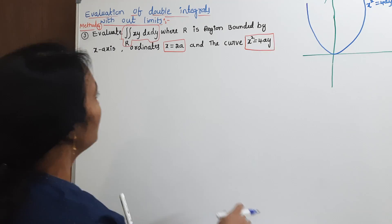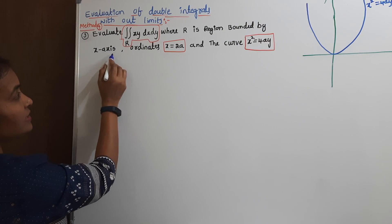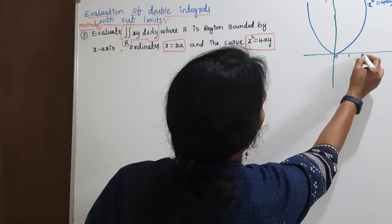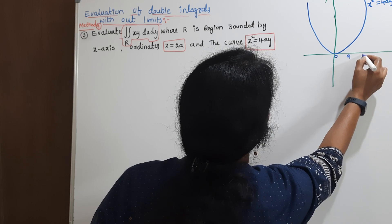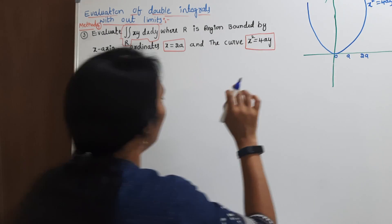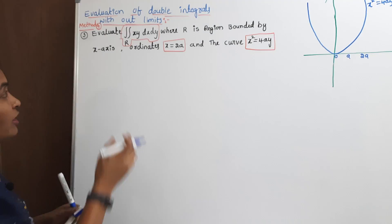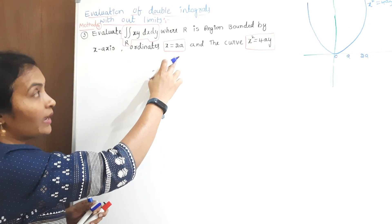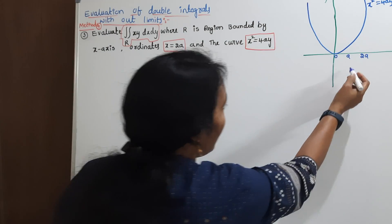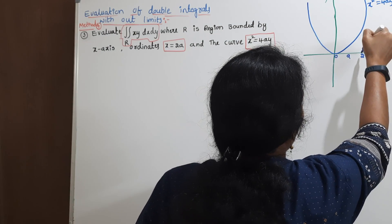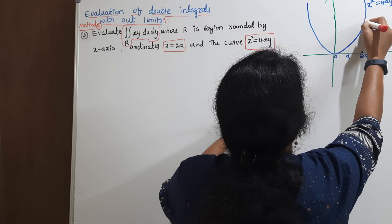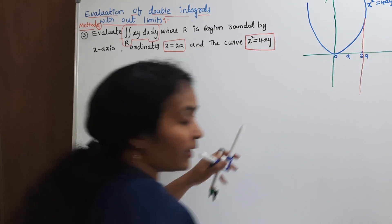Now consider the ordinates on the x-axis: starting at 0, then a, then 2a. Each strip length is a, so adding one more a gives us 2a, because the ordinate is x = 2a. The parabola touches the x = 2a line at that point, giving us the bounded region.